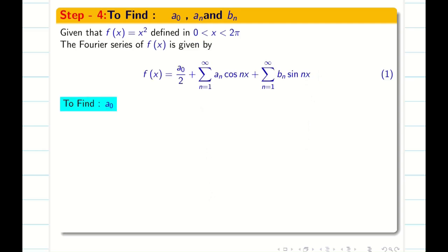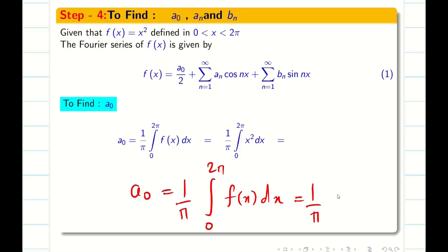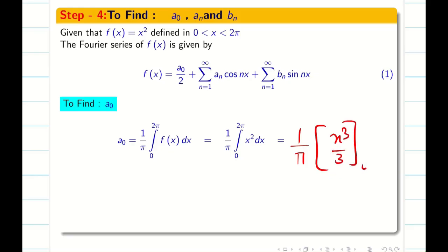Now write the Fourier series. I am going to find the term a naught. My a naught is going to be 1 by π integral 0 to 2π, and my function is f of x dx. That is 1 by π integral 0 to 2π x square dx.